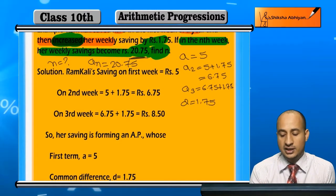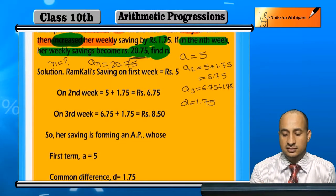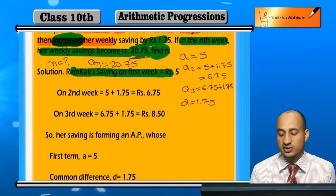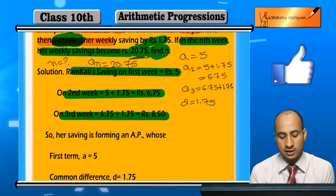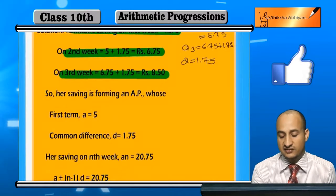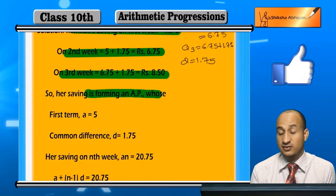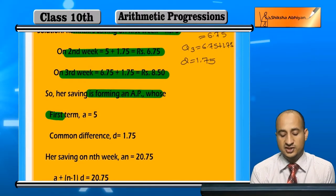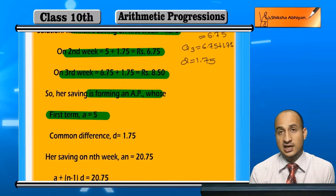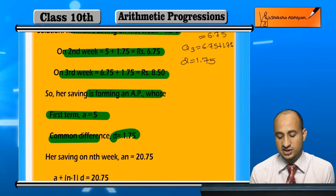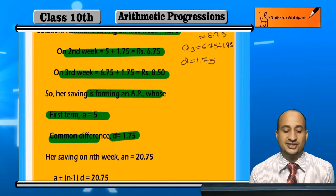So if we look at Raam Kali's savings: 1st week, 2nd week, 3rd week — this forms an arithmetic progression. Here, a is equal to 5 and common difference d is equal to 1.75.